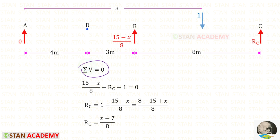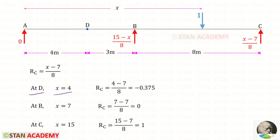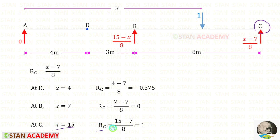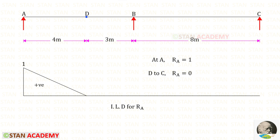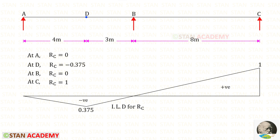Now, let us apply this rule and find RC. RB and RC are acting upwards, so both are positive. The unit load is acting downwards, so it will be negative. For RC, we will get (X minus 7) upon 8. At D, X will be 4 and RC will be minus 0.375. At B, X will be 7 and RC will be 0. At C, X will be 15 and RC will be 1. This is the ILD for RA, this is the ILD for RB, and this is the ILD for RC.